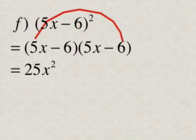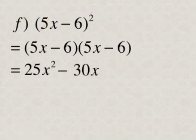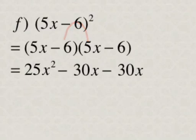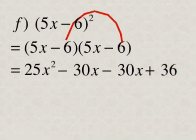Then we're going to multiply the outside terms — 5x times negative 6 is minus 30x. Then the inside terms: minus 6 times 5x is minus 30x. And then we're going to multiply the last terms, so negative 6 times negative 6 is positive 36.